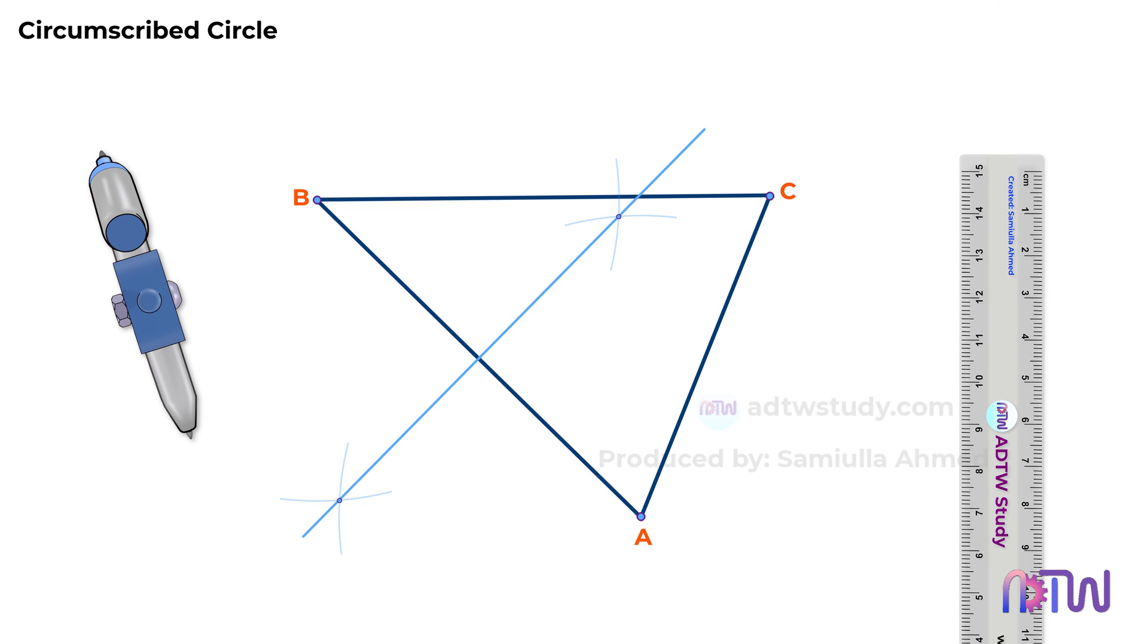Similarly, we will bisect side AC. Adjust the compass to a length more than half of AC. Using points A and C as centers, draw arcs above and below the line segment.